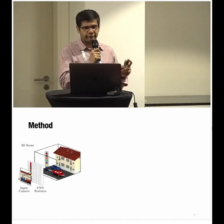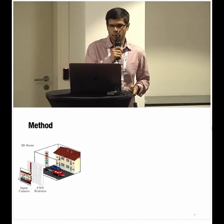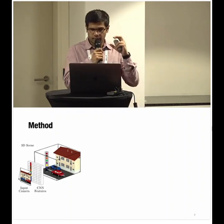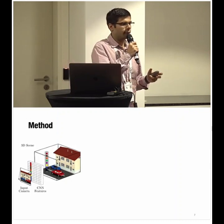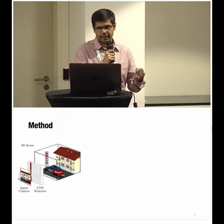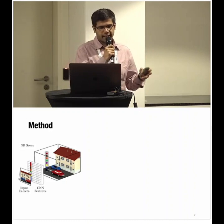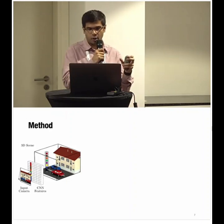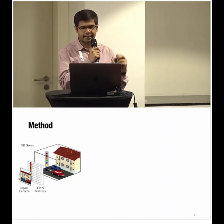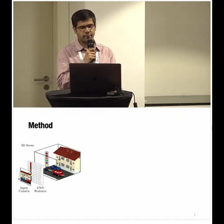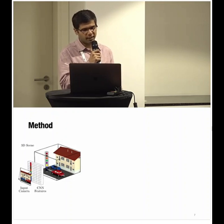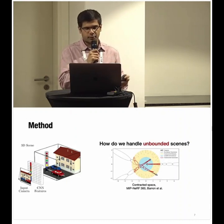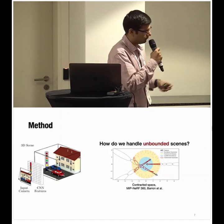For inference of a ground plan from a given image, we pass the image through a pre-trained ResNet-34 and extract intermediate activations. These features are then unprojected along the camera depth, using the Z-buffer at each point, into a feature volume via a trainable MLP.